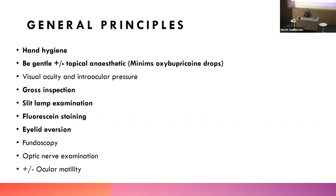Gross inspection is important: are the eyelids involved, or just the eye? Is the medial canthus involved — where the lacrimal sac is? Is it one eye or both? Is there a laceration of the eyelid — could there be an underlying rupture of the globe underneath? Slit lamp examination is really relevant in ED for red eye. Fluorescein staining is super relevant — the question you're asking is: is the surface of the cornea intact or not?